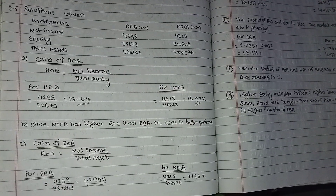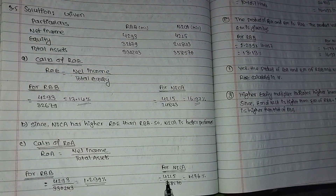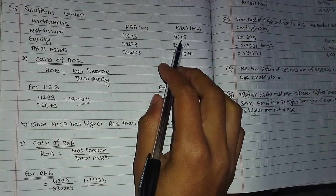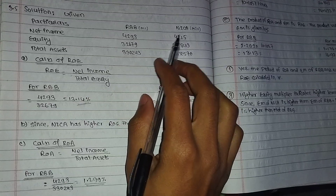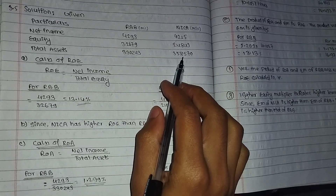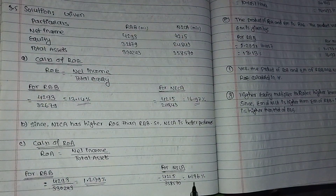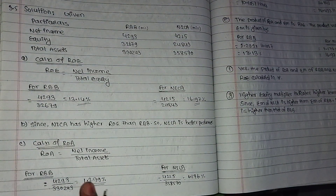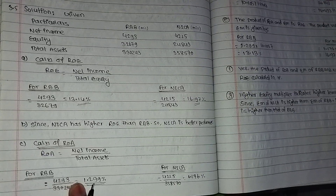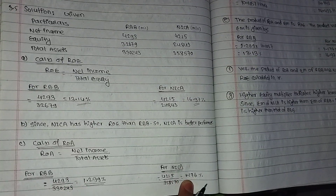How much is the return on assets? The return on assets for RBB is 1.299%. For NICS, net income divided by total assets gives 3,58,570, which is 1.176%. So ROA for RBB is 1.299% and for NICS is 1.176%.